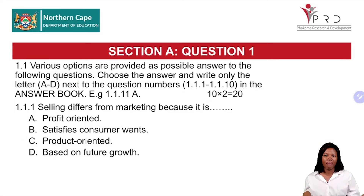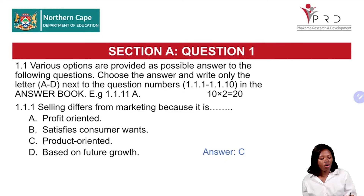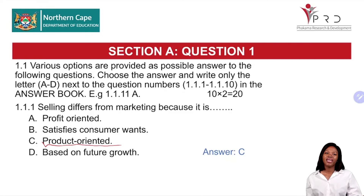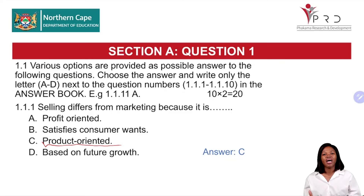Question 1.1.1: Selling differs from marketing because it is — the correct answer is C, which is product-oriented. Selling is different from marketing. Marketing is profit-oriented, involves long-term planning, and satisfies the consumer. But when it comes to selling, the only focus is on the product that must be sold. The correct answer is C, and you must write the letter, not the description.